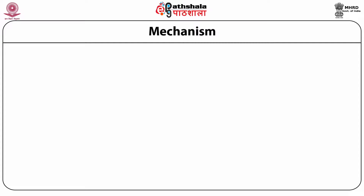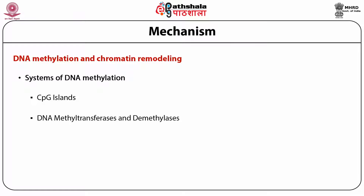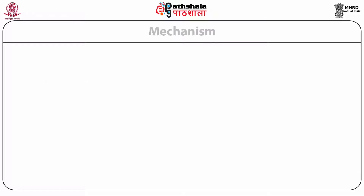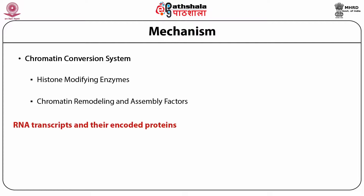Several types of mechanisms are involved in the epigenetic changes as well as their inheritance. These mechanisms are DNA methylation and chromatin remodeling systems. In DNA methylation, there are CpG islands, DNA methyltransferases, demethylases, as well as methyl CpG binding proteins responsible for epigenetic regulation. The chromatin remodeling system constitutes histone modifying enzymes as well as chromatin remodeling and various assembly factors. RNA transcripts and their encoded proteins as well as micro RNAs are also responsible for epigenetic regulation.